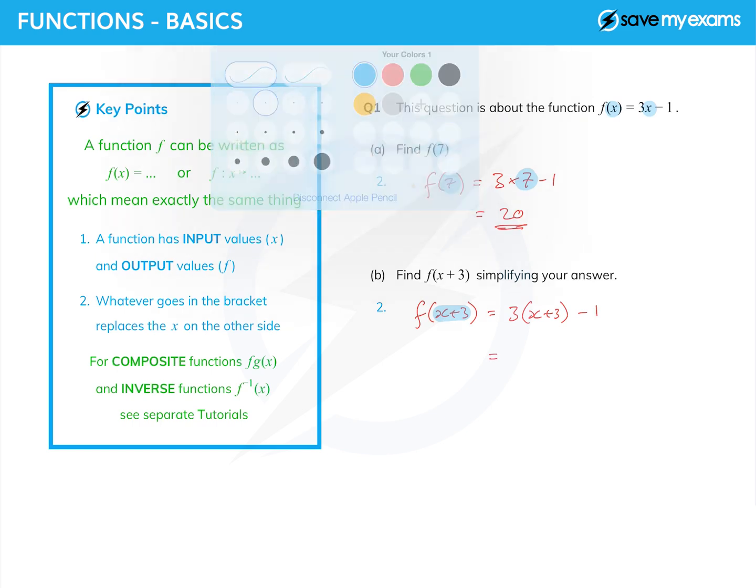Notice I've used a bracket, and all I have to do now is simplify that. So 3 times x and 3 times 3. Let's mark them on there like that: 3x, 3 times 3 is 9, still got the minus 1, and so we get 3x plus 8. But again, notice all I did was replace the x by x plus 3.